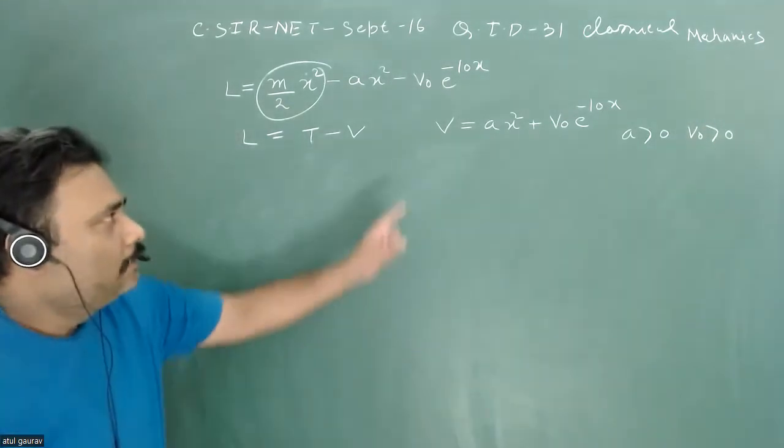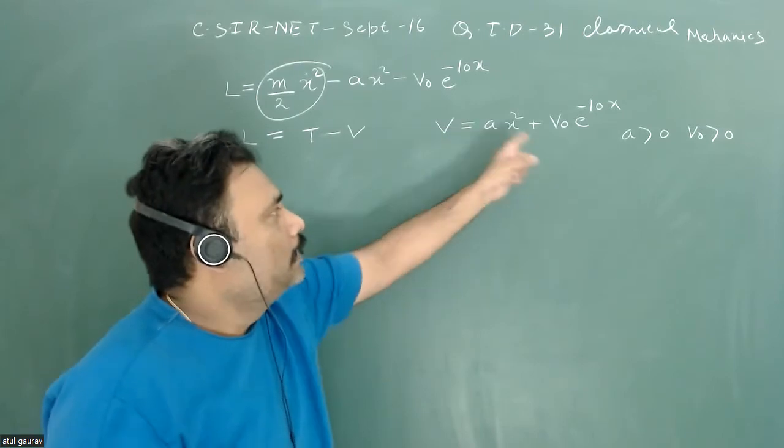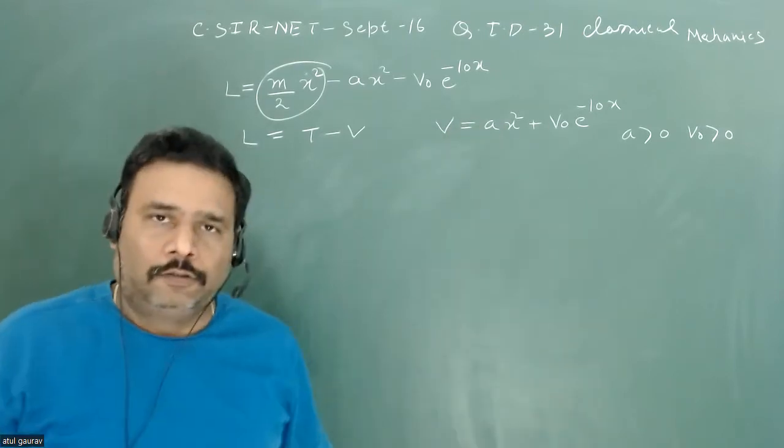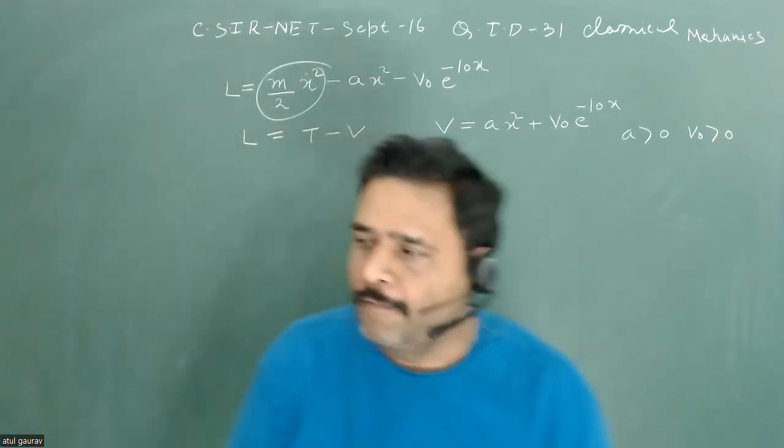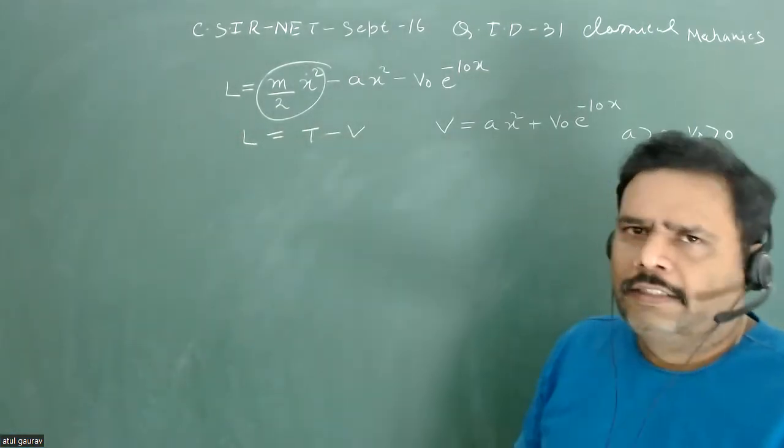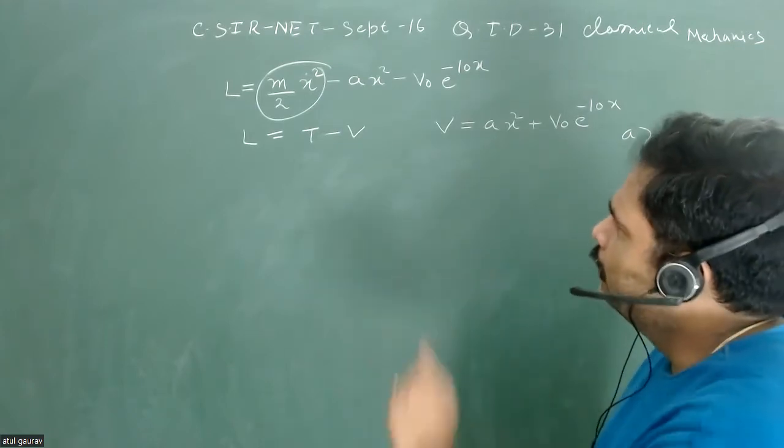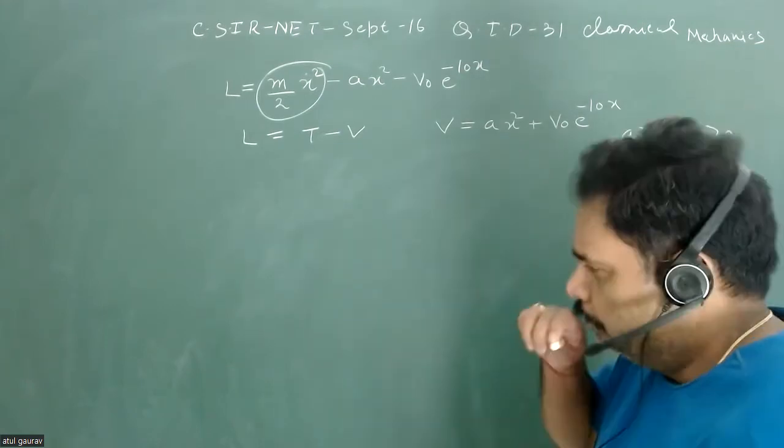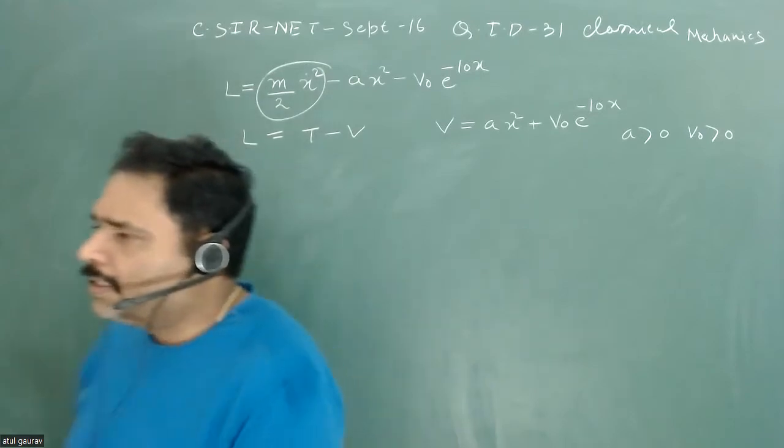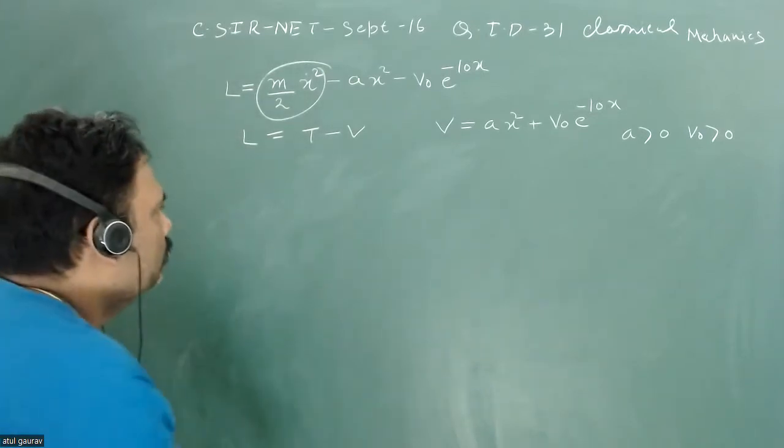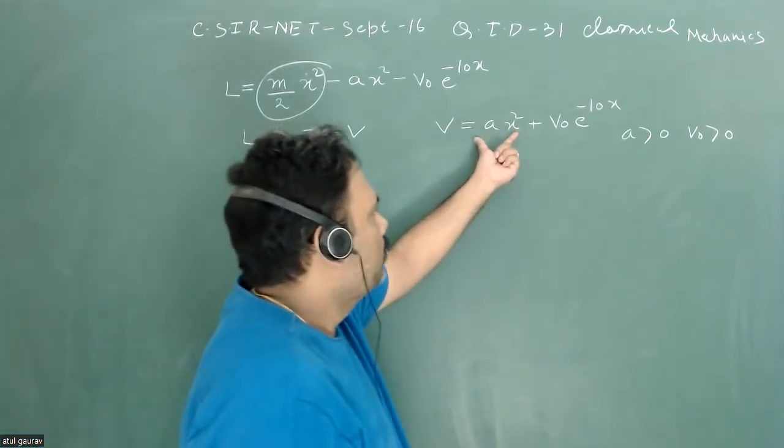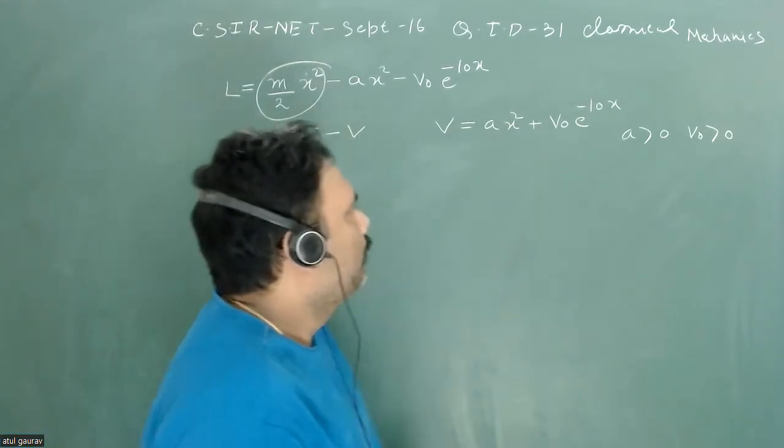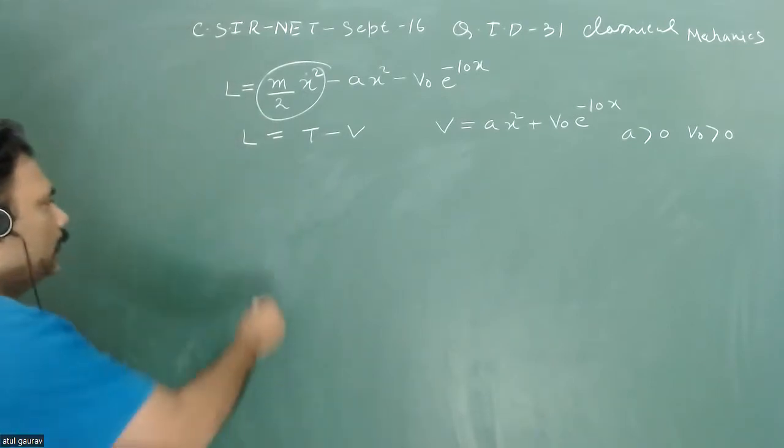So first, we have to see how this particular potential is going to vary and what should be the trend of this particular potential. And then we can easily plot what will be the phase space. So let's try to plot this potential. Before plotting the potential, we have to plot this one separately and this one separately, and then we can plot it very easily.